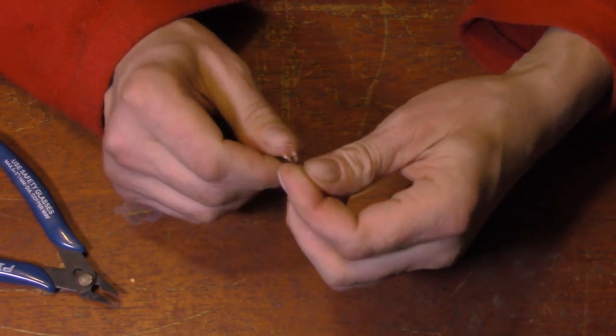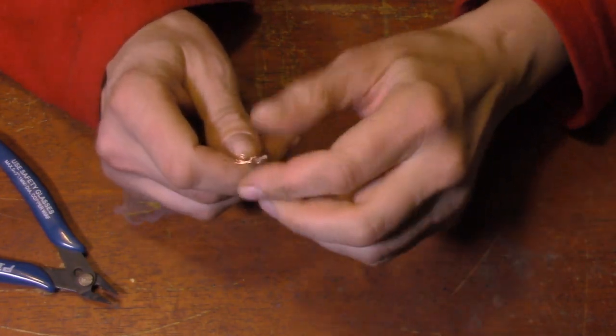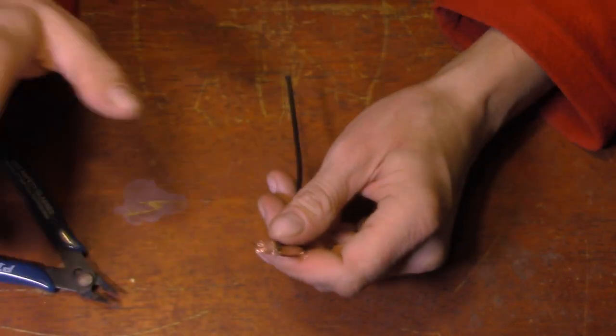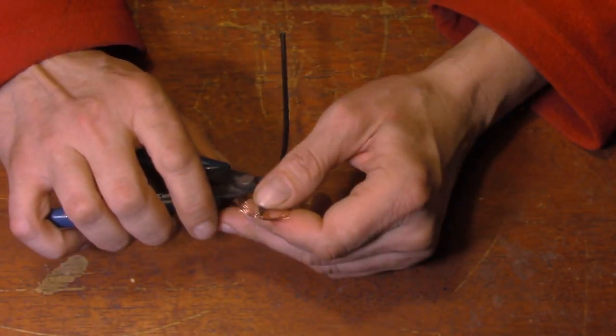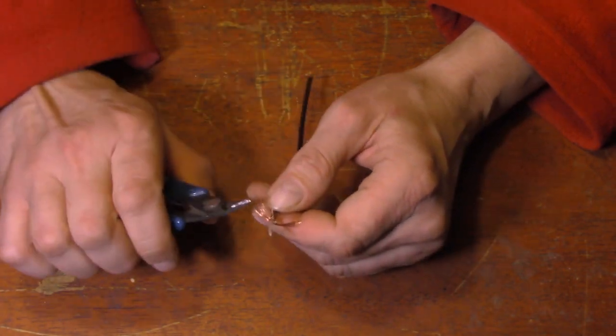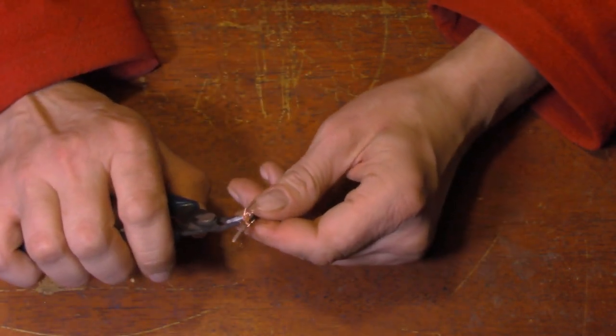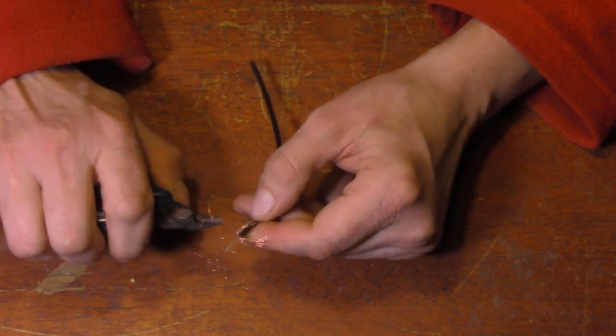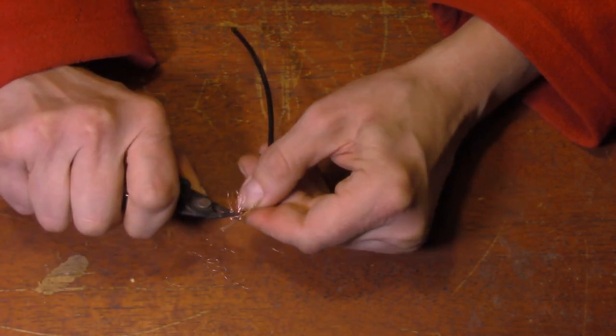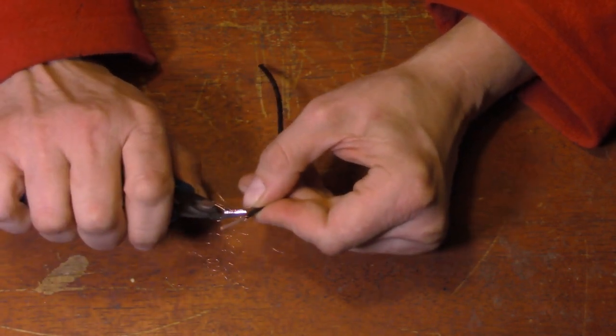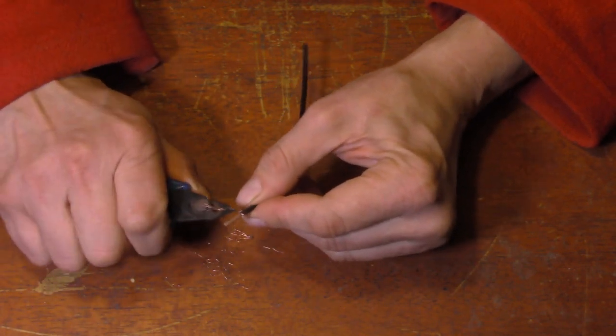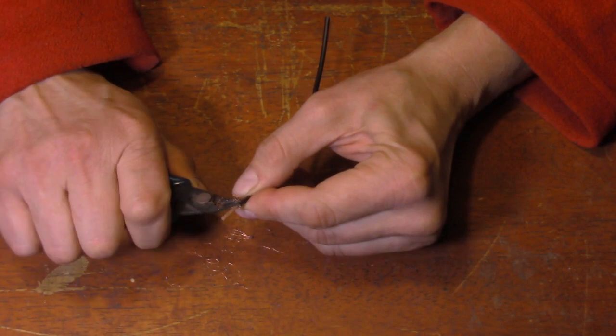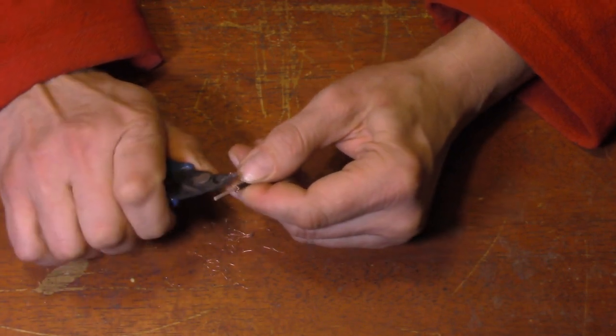Now, we're going to pull that back, because the shielding on the outside, we don't want to be connected to anything. Otherwise, if it's connected, the cable, like I said, will then act like an antenna. By being shielded, it keeps it from working as an antenna. So we're going to cut all those little pieces of wire off as close as we can. That's looking pretty good.